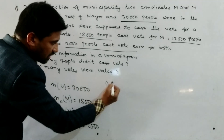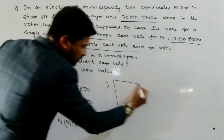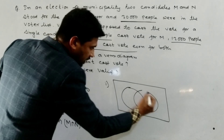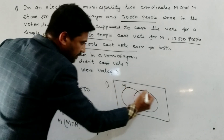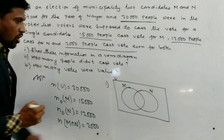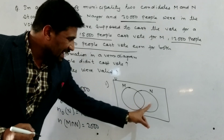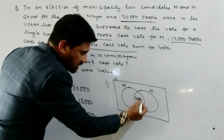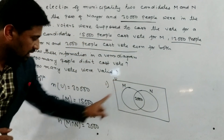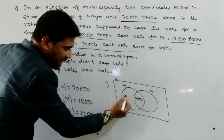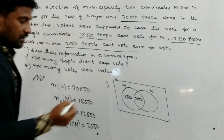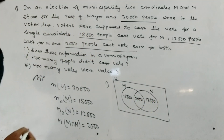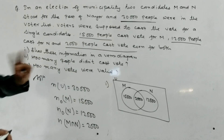Now we draw the Venn diagram. We draw two overlapping circles — one for M and one for N. In the intersection, we write 2,000 for those who cast for both. In the M-only region, we write 15,000, and in the N-only region, we write 12,000.